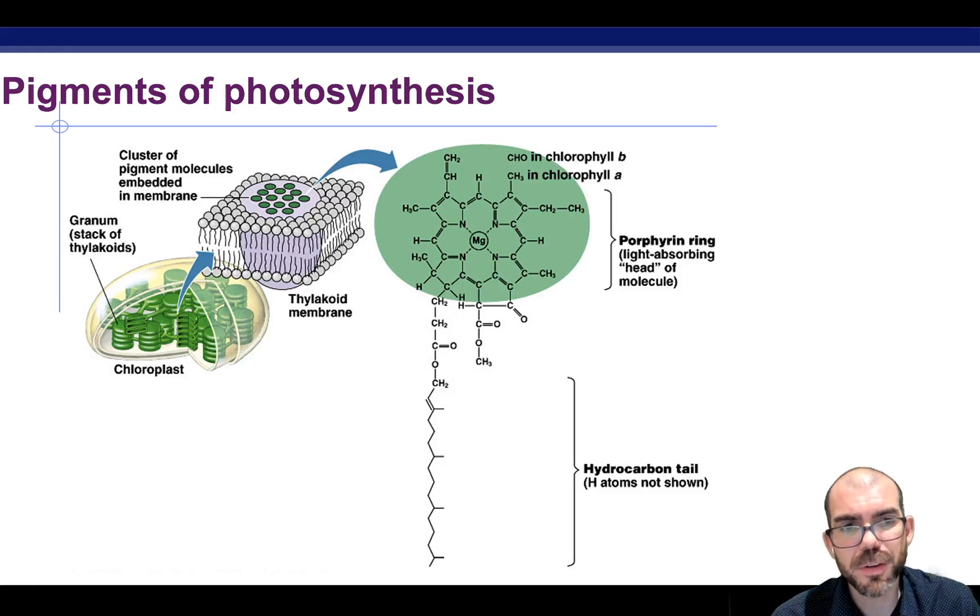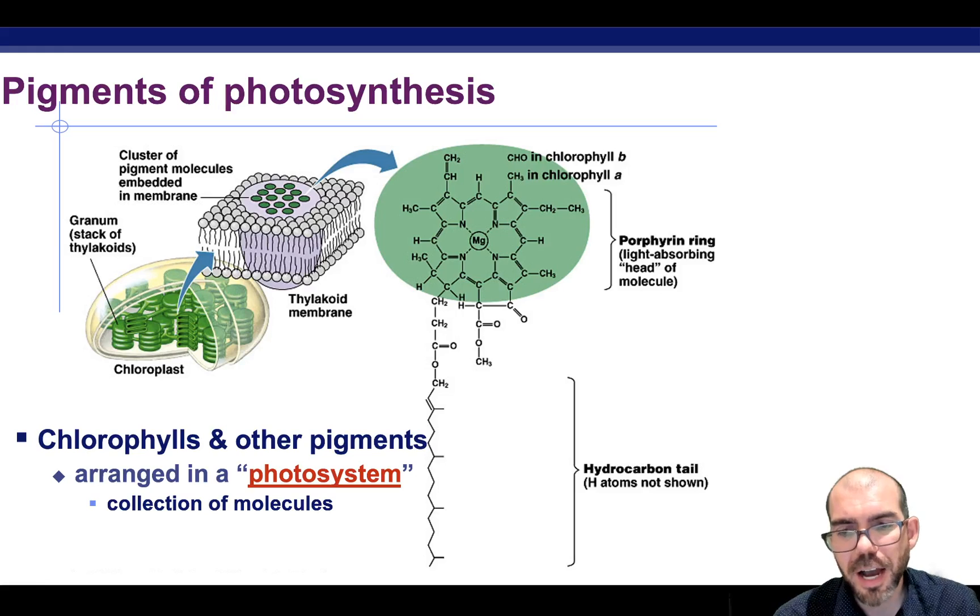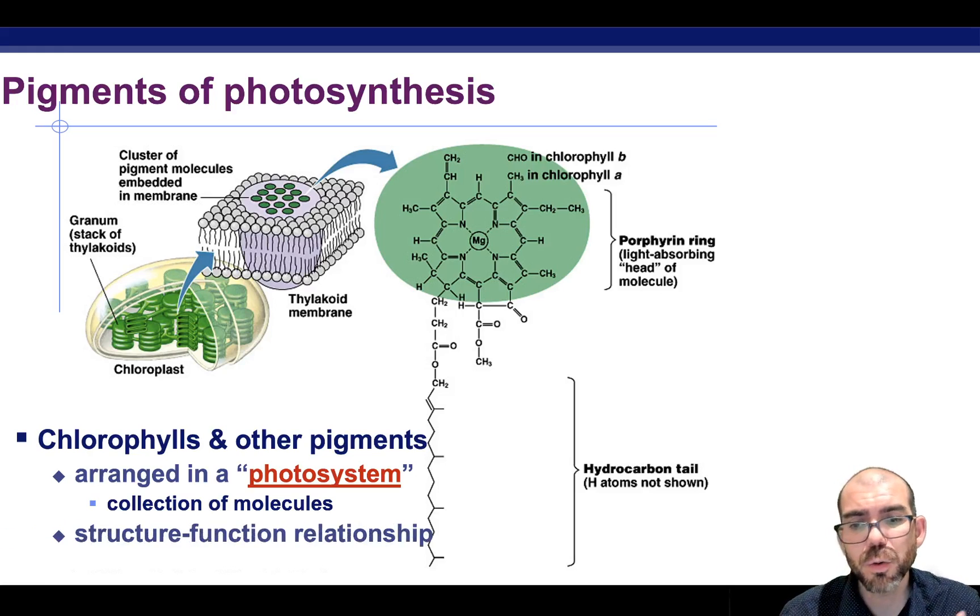When we think about the pigments of photosynthesis, oftentimes they're referred to as being a photosystem. A photosystem is nothing more than a collection of pigments in a portion of the plant that are utilized in order to obtain solar energy and do the process of photosynthesis. So you'll see the term photosystem quite frequently.